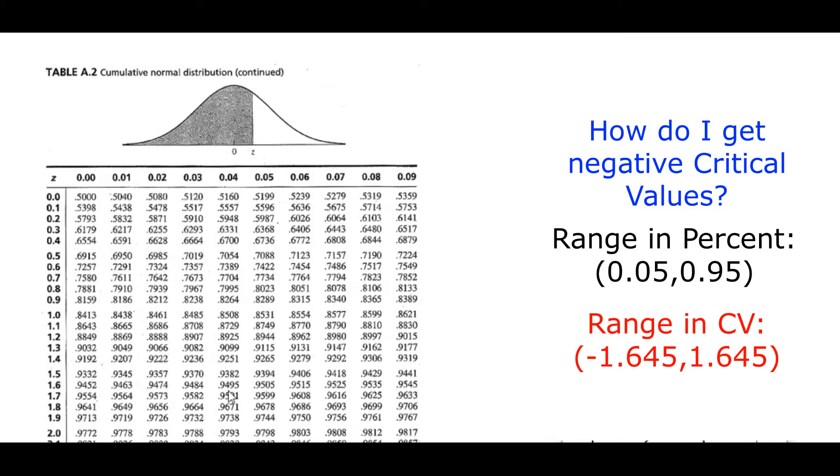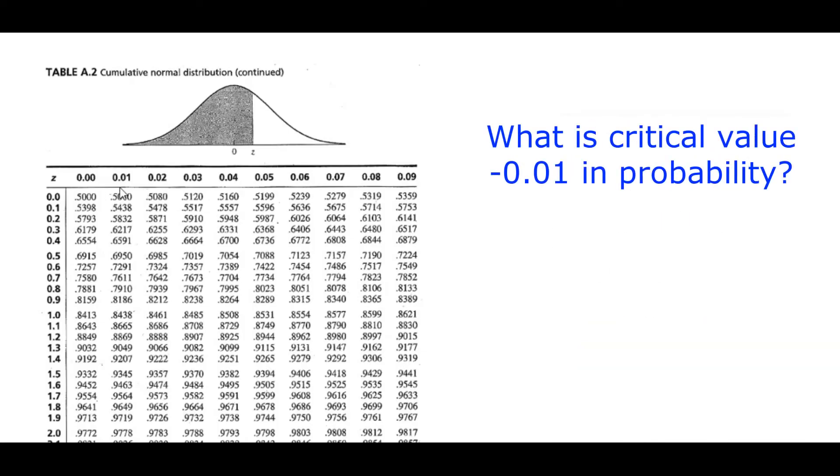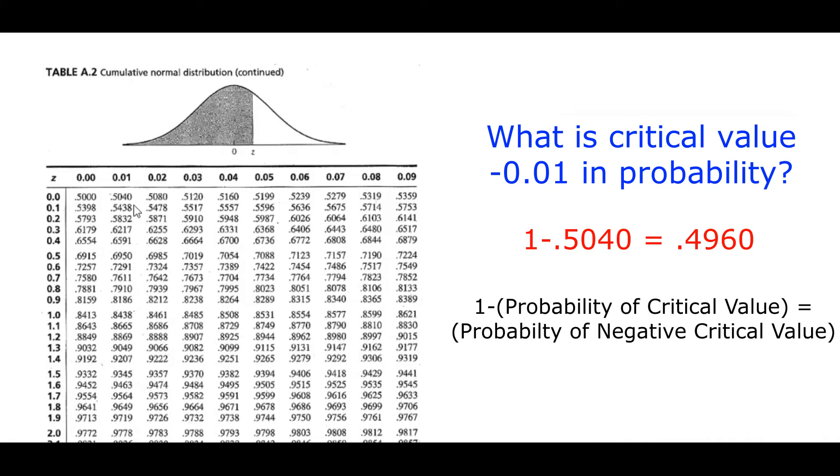Because, again, this is symmetrical, and you're trying to find the middle 90%, and you have on the outside 5% greater than and less than. And so it really is just that simple. You just put a negative sign in front of it. So if I wanted to know what negative 0.01 is, I just do 1 minus 0.5040 to give you 0.4960. So that's what negative 0.01 would be in terms of probability. And so the whole table works that way because, again, the normal distribution is symmetrical.